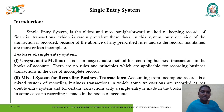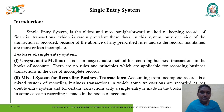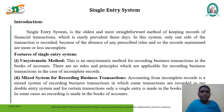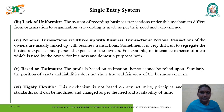The second feature is the mixer system for recording business transactions. Accounting from incomplete records is a mixer system in which some transactions are recorded as per the double entry system, for certain transactions only the single entry system is followed, and in some cases no recording is made in the books of account at all. So the mixer system follows both double entry and single entry.